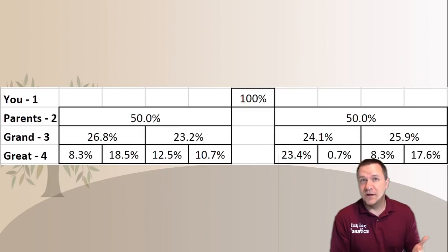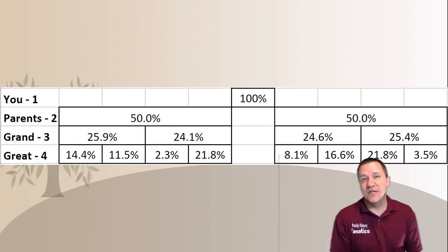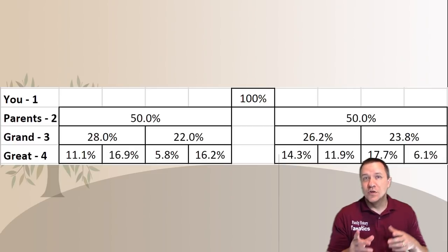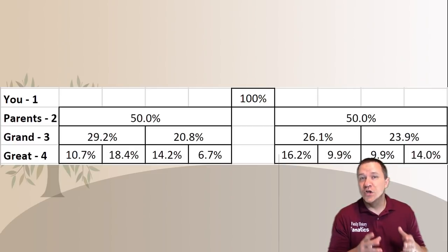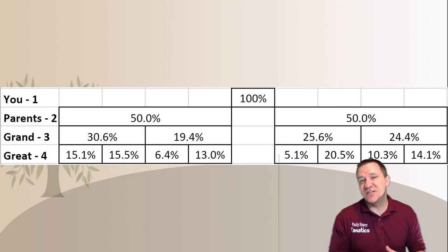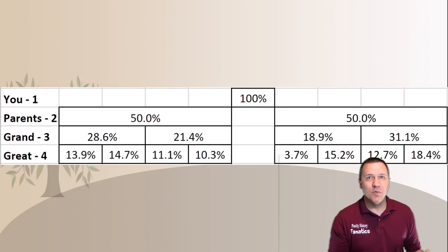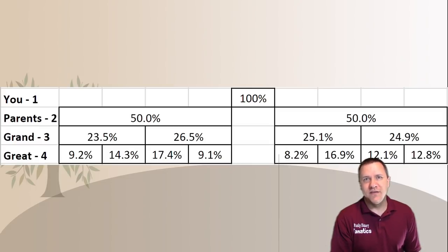But when it comes to your grandparents you can see you don't get exactly 25% from each one. However, the two grandparents from your father or your mother do add up to that 50% of DNA that you got from your parent. Now this is based on a probability distribution and so the majority of people cluster around numbers close to 25%.